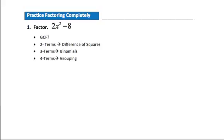Now let's practice this overall factoring strategy. Practice problem: factor 2x squared minus 8. Before going to difference of squares, we first check if there's a greatest common factor in these two terms. There is — 2 is a common factor of both 2 and 8. So the very first thing we do is factor a 2 out front. When we do that, 2 out of the first term leaves x squared, and 2 out of 8 leaves 4.